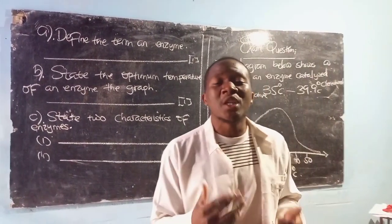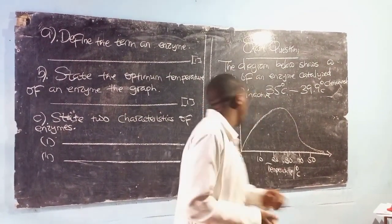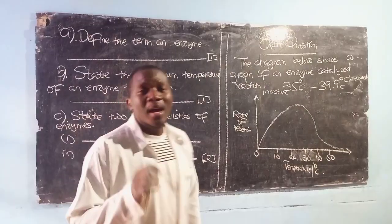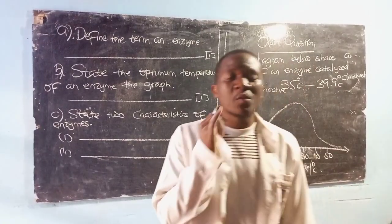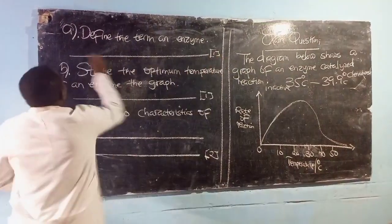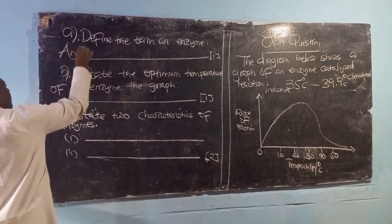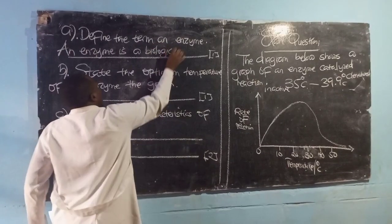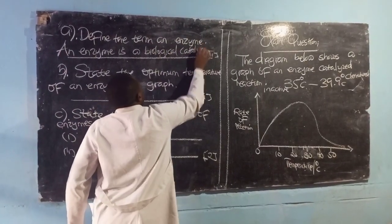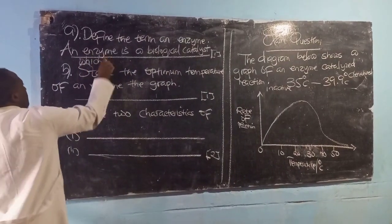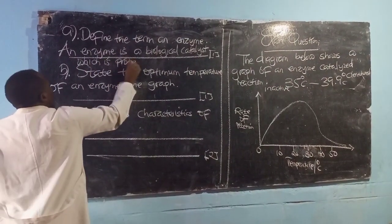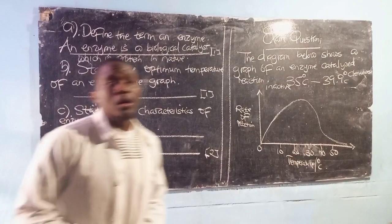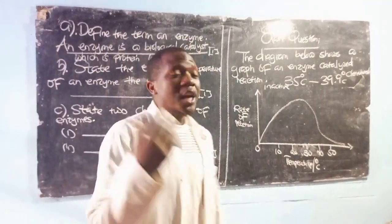Here are some questions. Define the term an enzyme. An enzyme is a biological catalyst which is protein in nature. So here we are going to say an enzyme is a biological catalyst which is protein in nature.